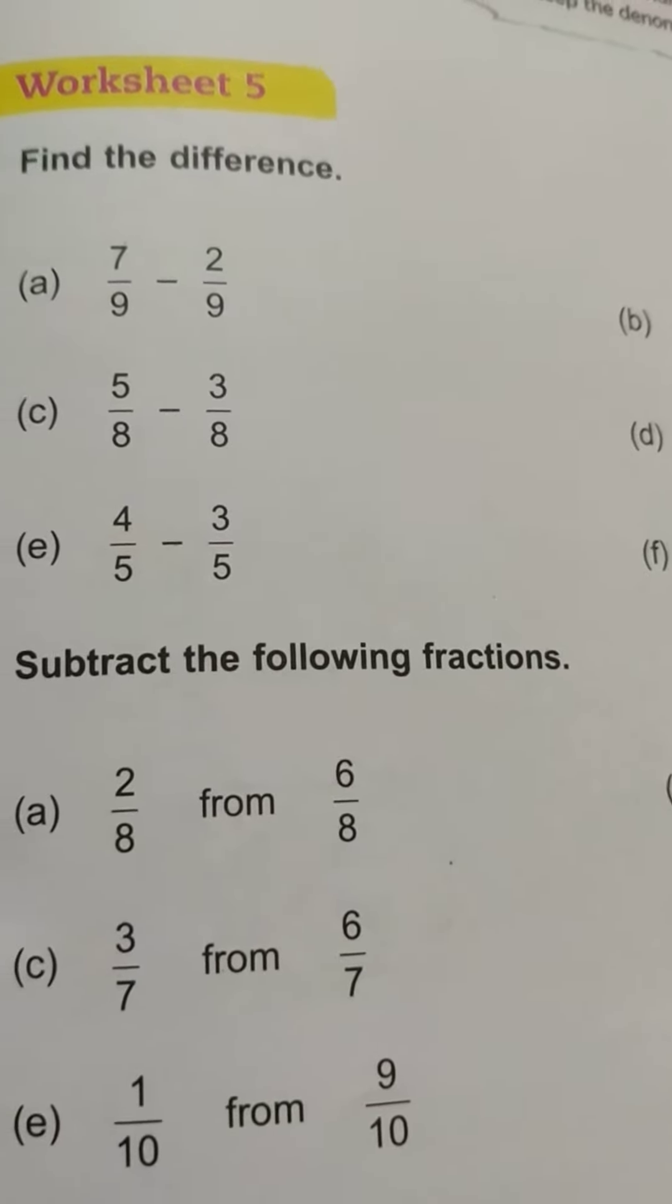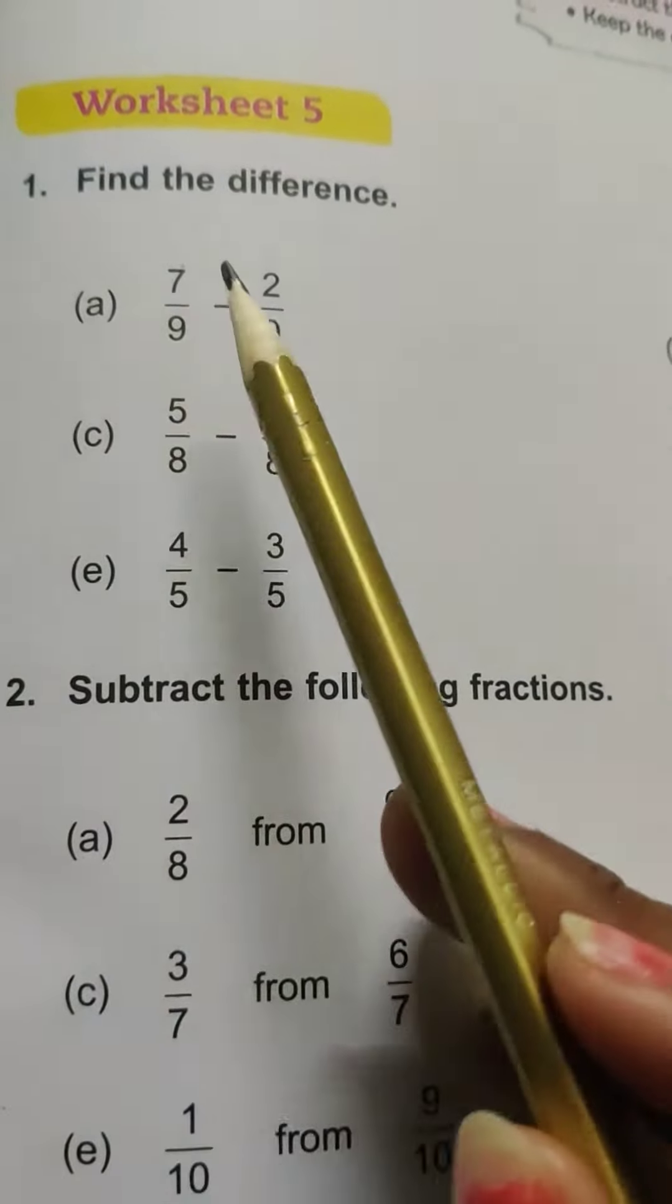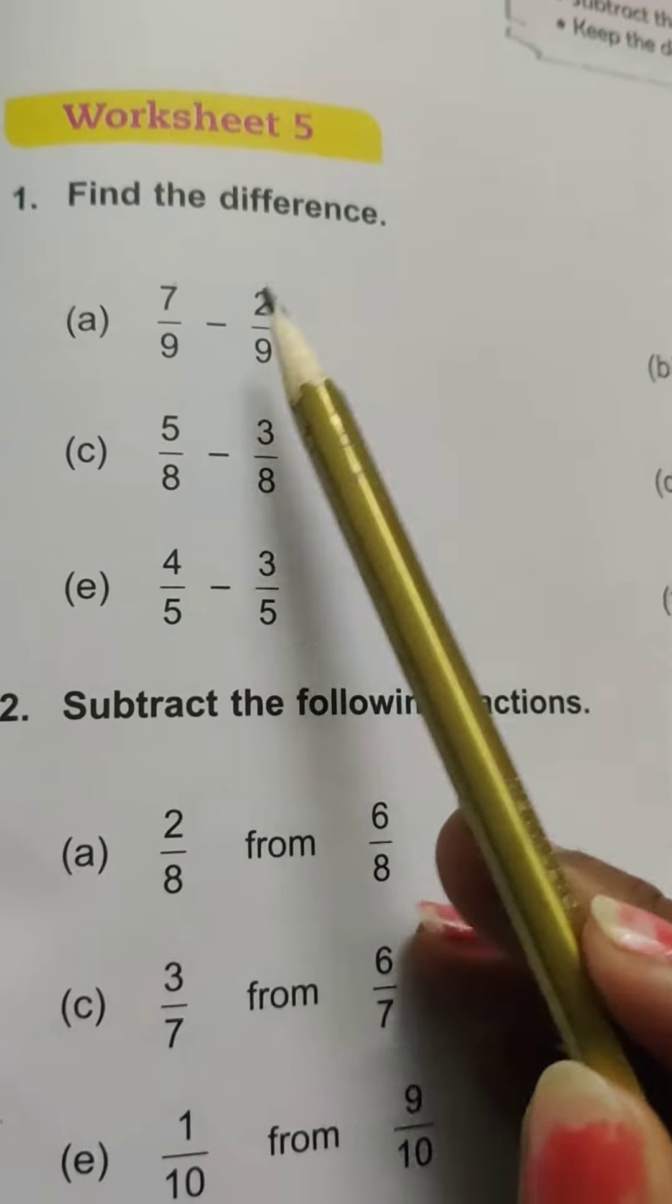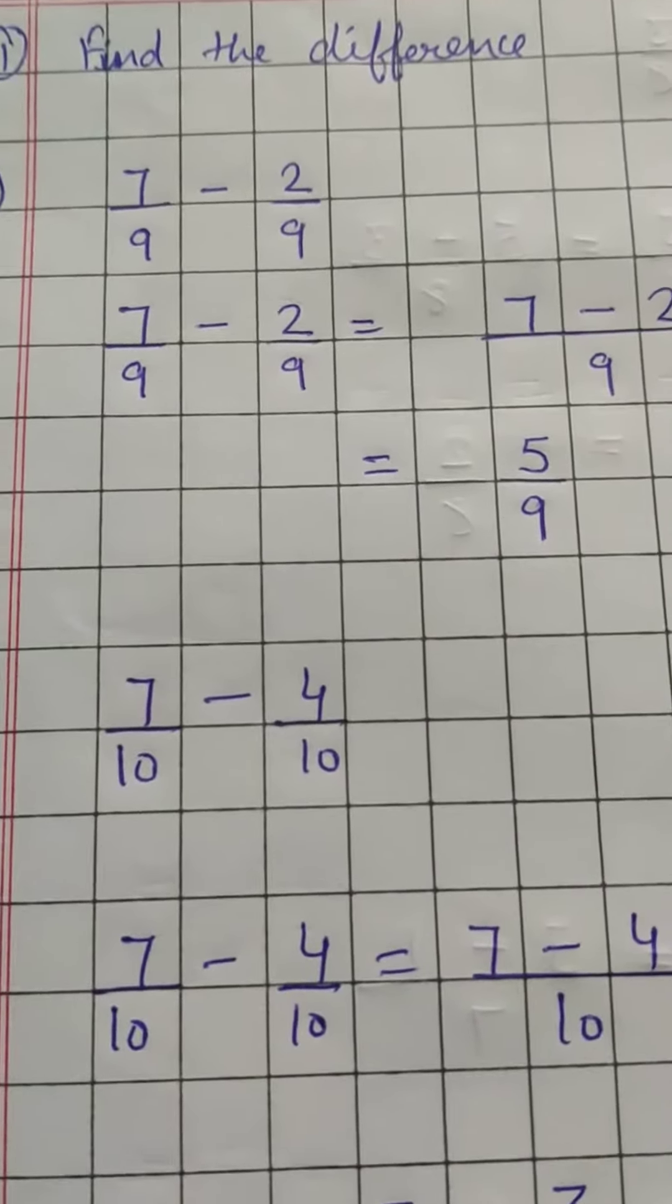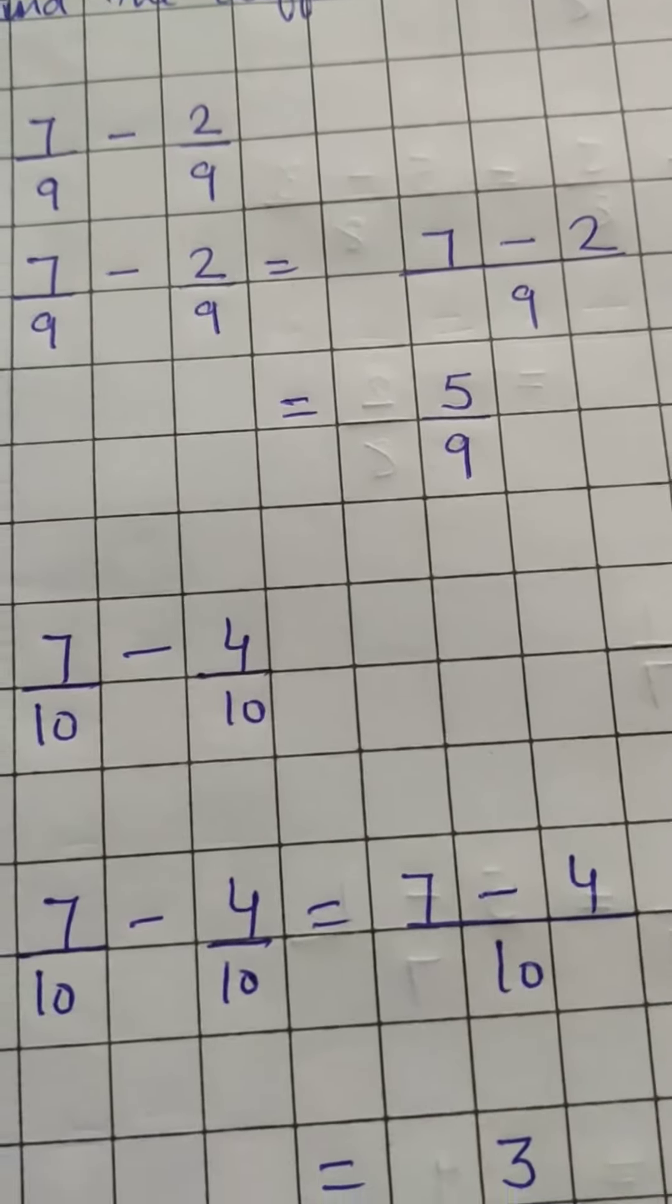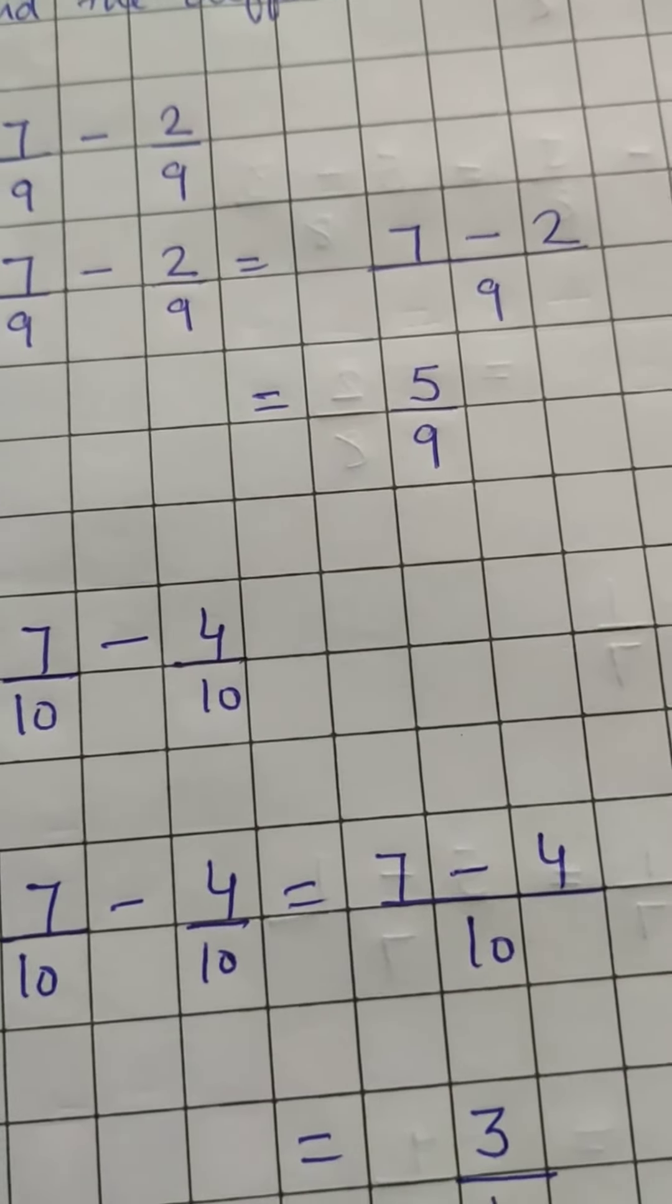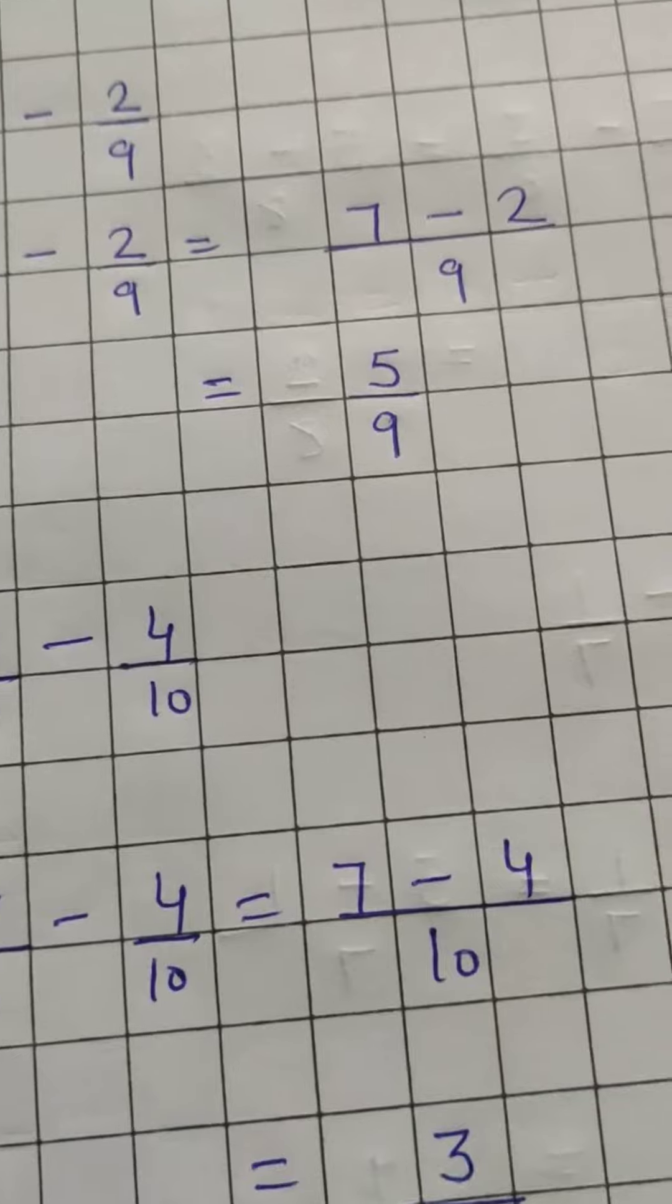You can see the minus sign here. Seven by nine minus two by nine we have to solve. It will solve in exactly the same way as we did in the addition case. Same procedure follows, just plus has become minus. So instead of addition, we simply do subtraction. The procedure remains the same.